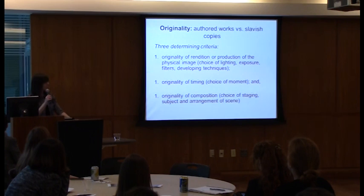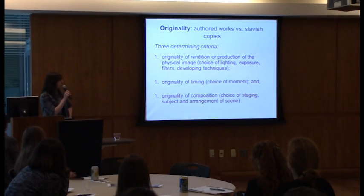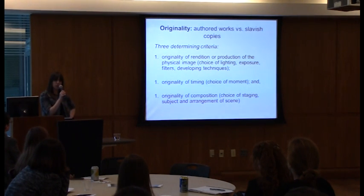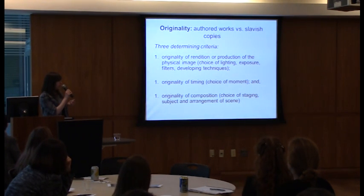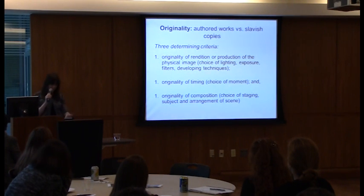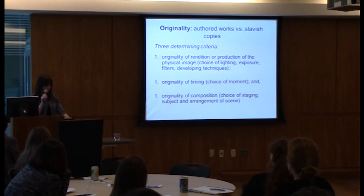To claim copyright protection, Bridgman needed to show that the images were actually authored works and non-slavish copies — slavish copies being a term referring to two-dimensional works of art meant to be exact replications of the original. Judge Kaplan expressed three criteria for determining the originality of a photograph: first, the originality of rendition or production of the physical image, including choice of lighting, exposure, filters, and developing techniques; second, originality of timing — the choice of moment; and third, the originality of composition — choice of staging, subject, and arrangement of scene. While the originality standard did not require novelty, the need for creativity had been established by the courts in Feist.